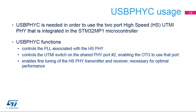USB-PHY-C is a small controller needed whenever the high-speed PHY will be used. It is to be used for controlling the PLL inside the high-speed PHY and enabling OTG controller access to its second port. Fine-tuning of the high-speed PHY should also be done by using USB-PHY-C. This is necessary to get notably a well-adjusted eye diagram.